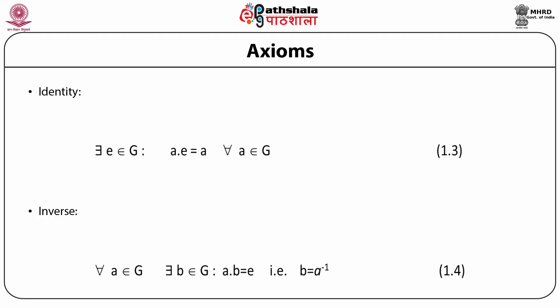So if all these four properties — or axioms — are satisfied by the elements of a set, then the set forms a group.